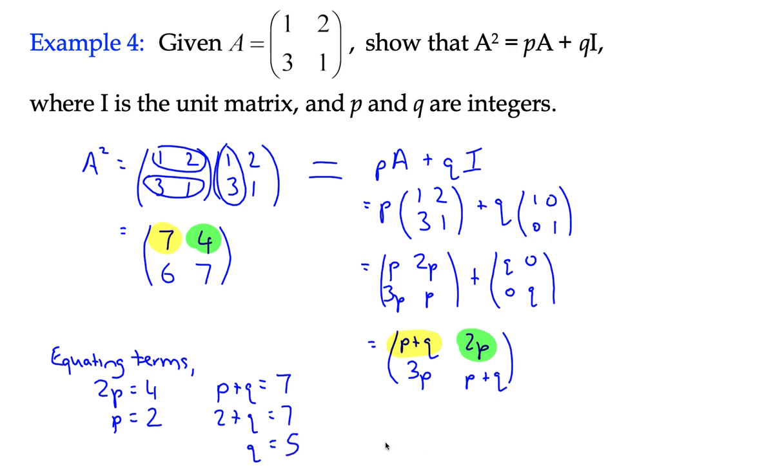In other words, in conclusion, we can say that A squared is equal to 2A, because that's P times A, plus QI. Well, Q is 5, so we've got 5I. So that's us using the unit matrix. At the moment, you'll see it cropping up, and that's one of the ways in which we can use it. You just need to know at the moment what the unit matrix looks like.